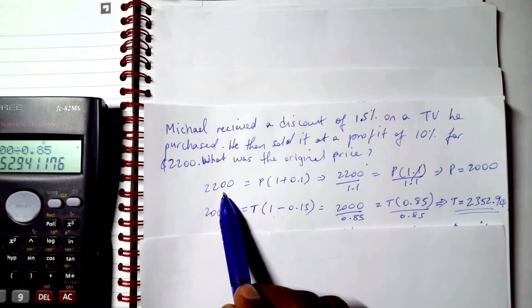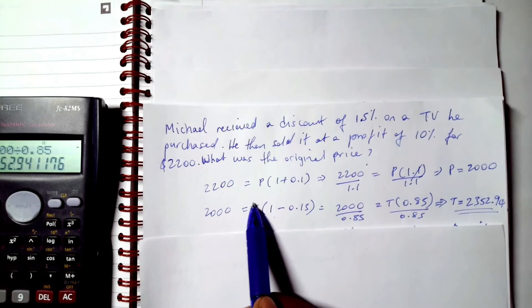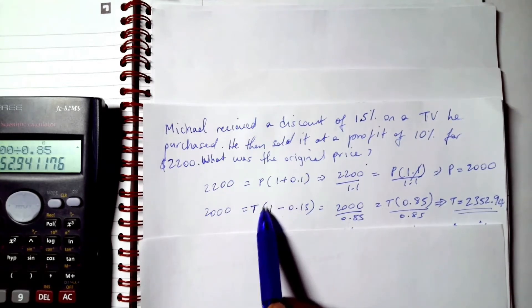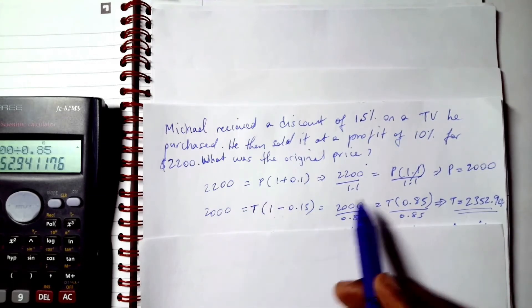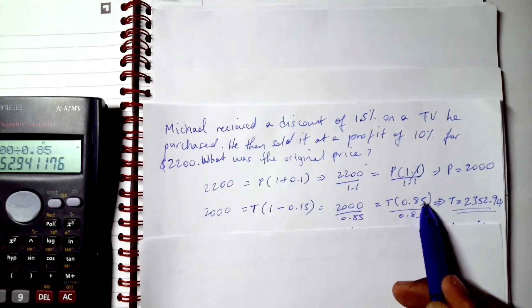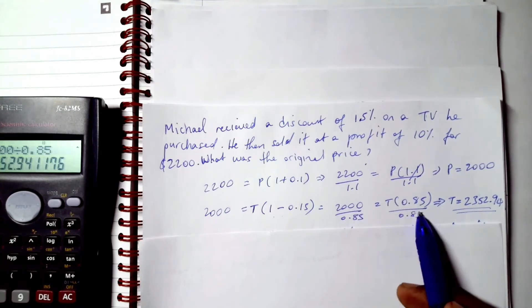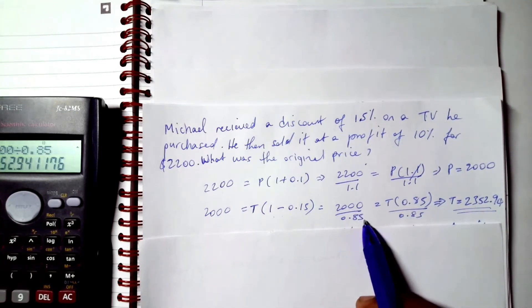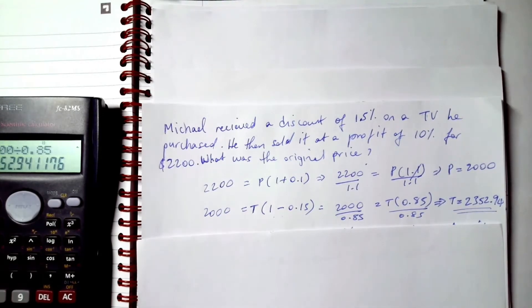The $2200 was the last figure, so we have to find out what value brought us to the $2200. That value was $2000. Then we have to find out what value with the discount brought us to $2000, and we proceed as such.